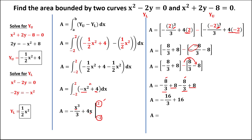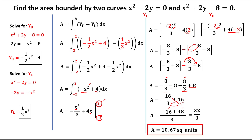To solve for the area, using the butterfly method: negative 16 over 3 plus 16 over 1. Negative 16 times 1 is negative 16, and 3 times 16 is positive 48, over 3. So negative 16 plus 48 equals positive 32 over 3. Therefore the area equals 32 divided by 3, which is approximately 10.67 square units. This is the area bounded by the given two curves.